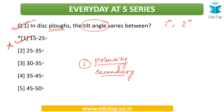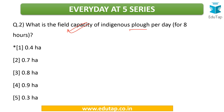The second question is: what is the field capacity of an indigenous plow per day, assuming eight hours of work per day? When we talk about indigenous plow, it is something operated manually, so eight hours per day is taken as working capacity when humans are involved. The answer to this question is 0.4 hectares. This is an important question and there might be a direct question on it as well.